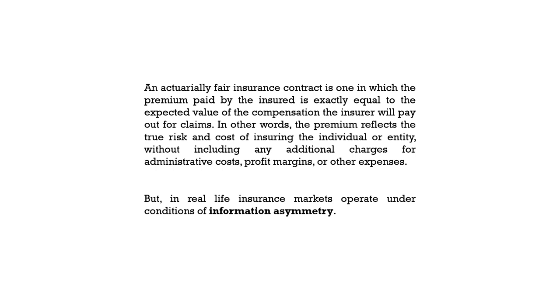You will recall that in the last lesson we got introduced to the income utility curve of an individual. We studied about demand for health insurance, learned how to define a risk averse individual, and why risk averse individuals demand insurance, particularly health insurance. We also studied a basic insurance contract, the outcome of which is an actuarially fair insurance contract, in which the premium paid by the insured is exactly equal to the expected value of the compensation the insurer will pay out for claims.